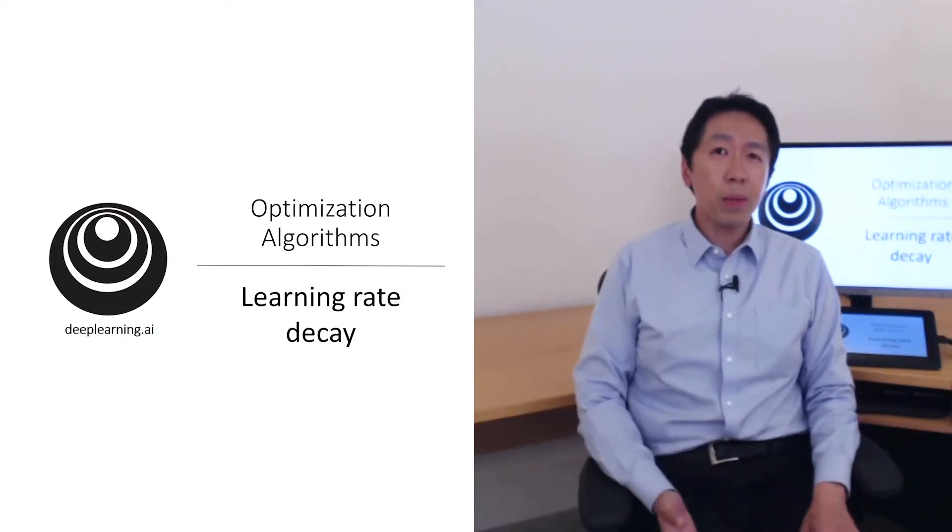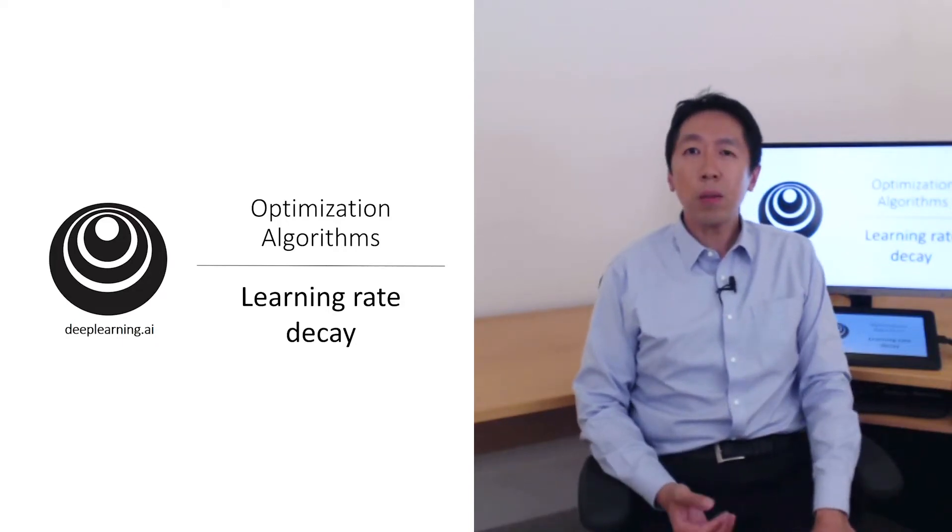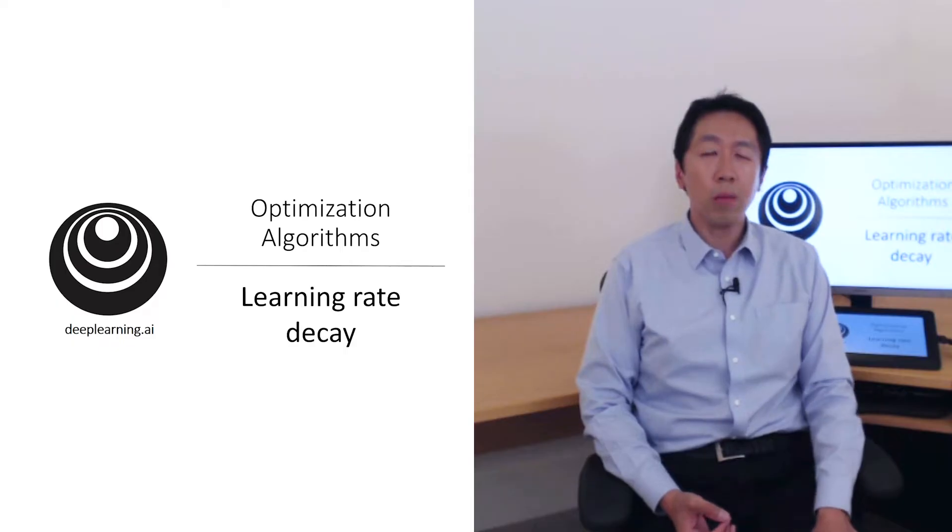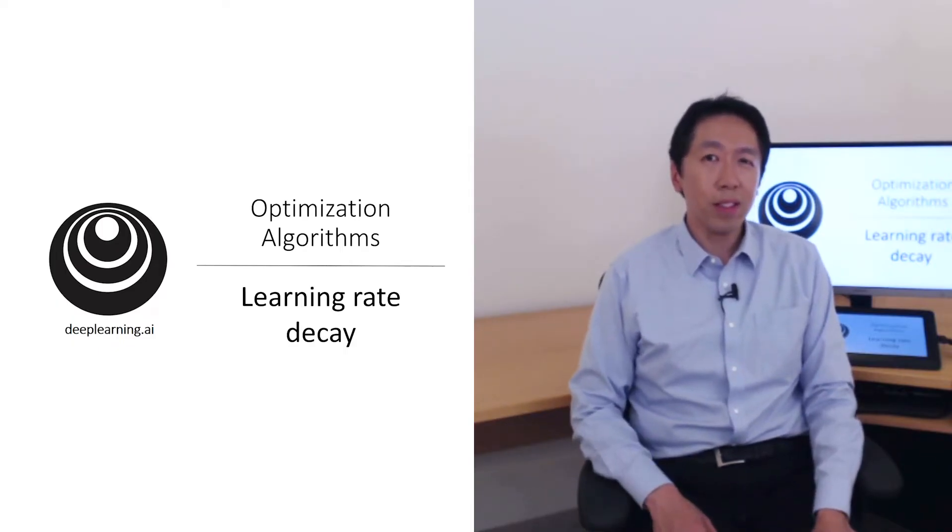One of the things that might help speed up your learning algorithm is to slowly reduce your learning rate over time. We call this learning rate decay. Let's see how you can implement this.